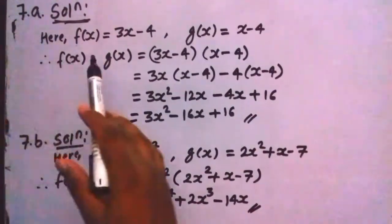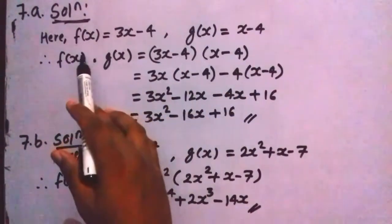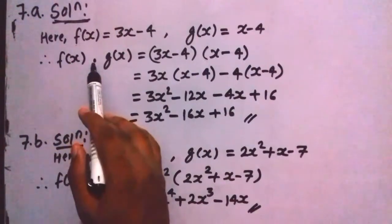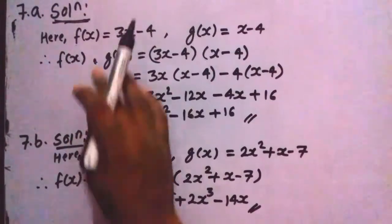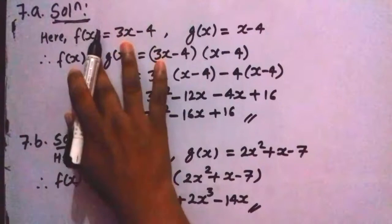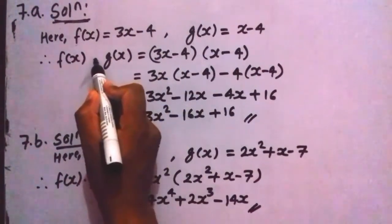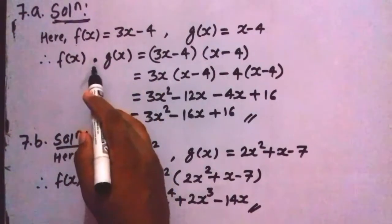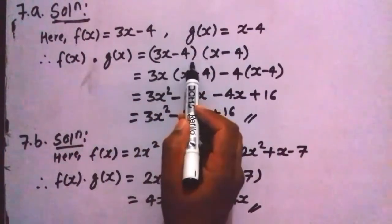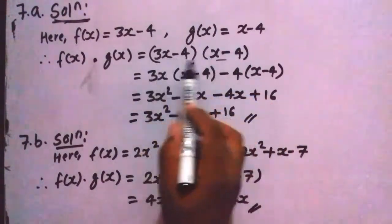In question number 7a, these two polynomials are given. For multiplying them, we write f(x) — this dot symbol denotes multiplication. In place of this we can write it differently, but usually in algebra we write this type of symbol for multiplication. So f(x) polynomial multiplied by g(x) polynomial.